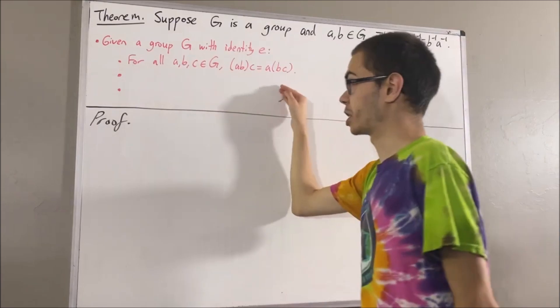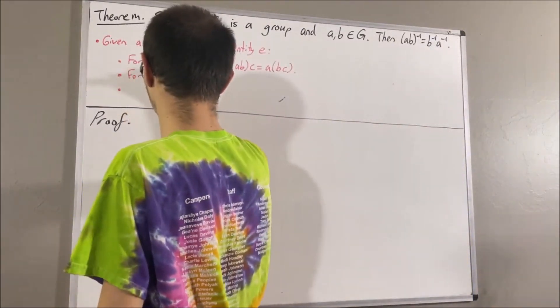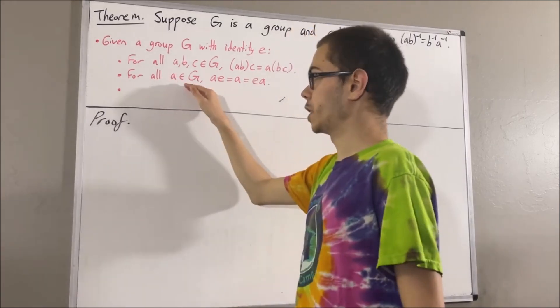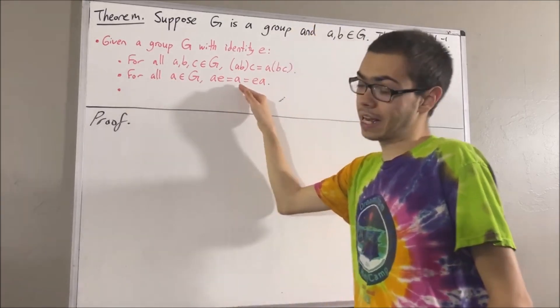The second property comes from the definition of the identity. Which says, for all elements A in G, AE is equal to A, which is equal to EA.